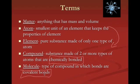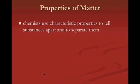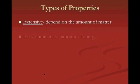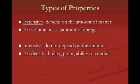Now, the properties of matter — chemists use characteristic properties to tell us about the different types of elements and substances we're dealing with, and these help us put substances into groups. We have extensive and intensive properties. Extensive properties depend on the amount of matter, like volume or mass. Intensive properties don't depend on the amount — for example, the density of water is always the same whether we have a million liters or just one milliliter.